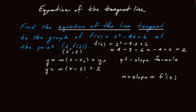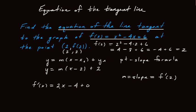So f prime of 2 is going to be our slope. How do we figure out what f prime of 2 is? We go back to the formula for the function and use that to find the derivative for any x, then plug in 2. The derivative of f is the derivative of x squared, plus the derivative of minus 4x, plus the derivative of 6, by the addition rule. Using the power rule, the derivative of x squared is 2x. The derivative of minus 4x is minus 4, and the derivative of 6 is 0. So altogether, f prime of x equals 2x minus 4.